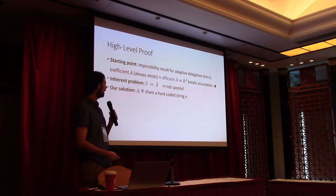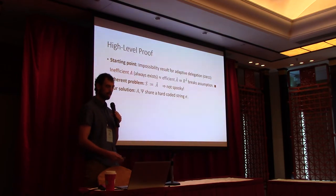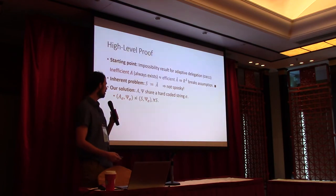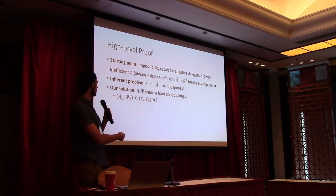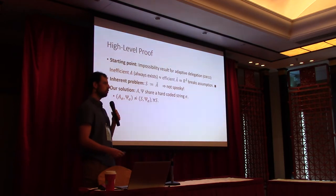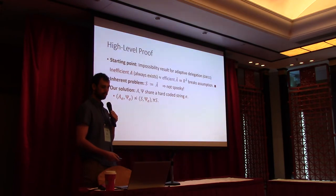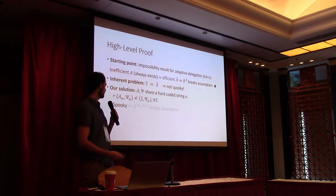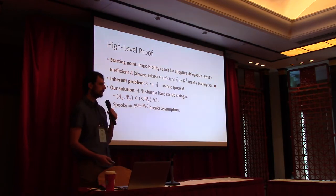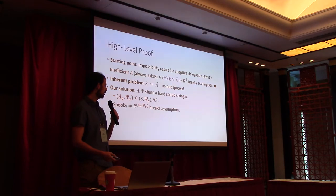Our solution is to allow the adversary A and distinguisher psi to share a common string sigma, and we construct sigma such that for every simulator, it cannot simulate sigma. The key point is that sigma appears on both sides of the equation, so even if we replace the adversary with simulator S, the distinguisher psi still has this complicated string sigma that no simulator can simulate. If our adversary cannot be simulated, it is spooky, and the reduction with black-box access to the adversary and distinguisher can break the assumption.